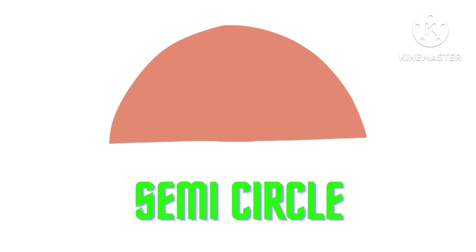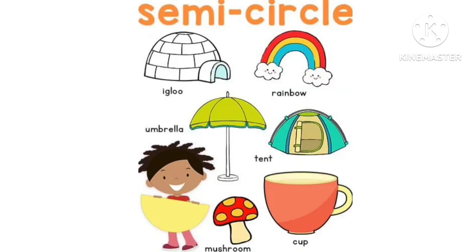Semi-circle. Semi-circle examples: igloo, rainbow, umbrella, tent.